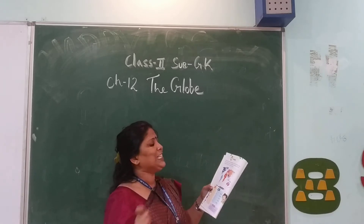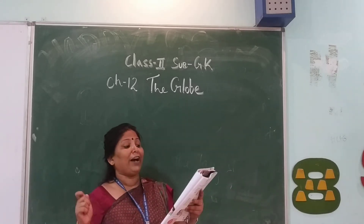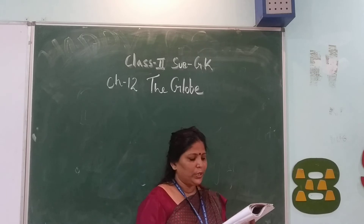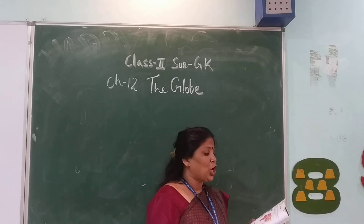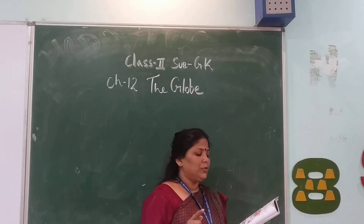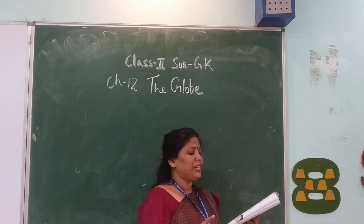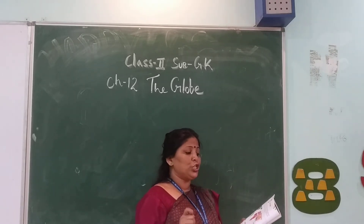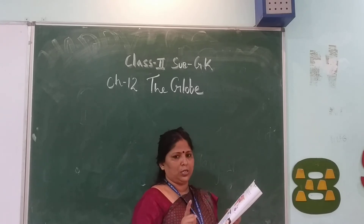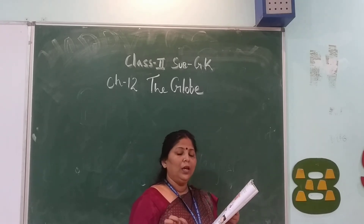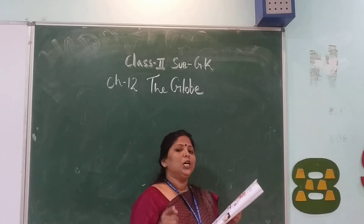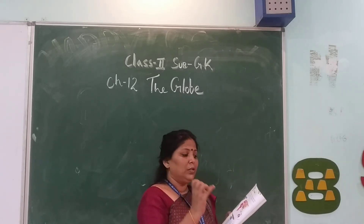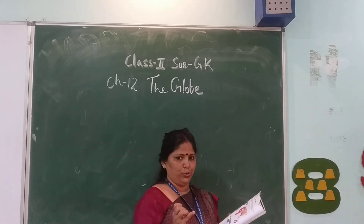There are seven continents and five oceans on the earth. Write the names of the continents, first to seven, and the oceans marked on the world map. Choose your answers from the clue box. Students, you have to mention the continents and five oceans also.